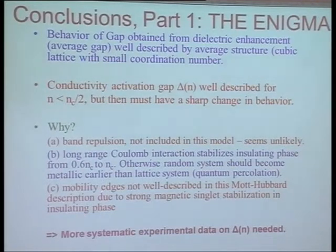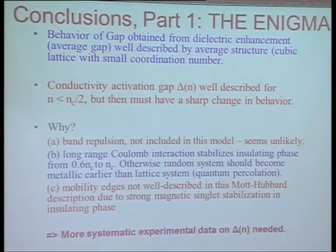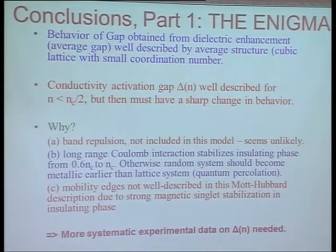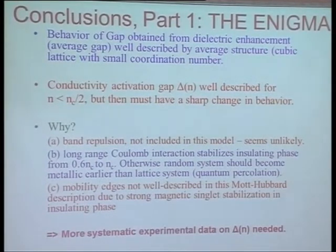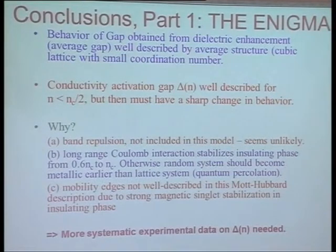The two other possibilities are: long-range Coulomb interaction stabilizes the insulating phase from 0.6 Nc to Nc, or some other Coulomb interactions are responsible for stabilizing the insulating phase. The other possibility, which I'm beginning to feel also plays a major role, is that this system throws away magnetism completely. Whereas we know that the magnetic behavior of the insulating phase is extremely well described by a valence bond glass — there are a lot of singlets happening in the system, and that singlet stabilization is somehow lifting the mobility edge more than this calculation shows.